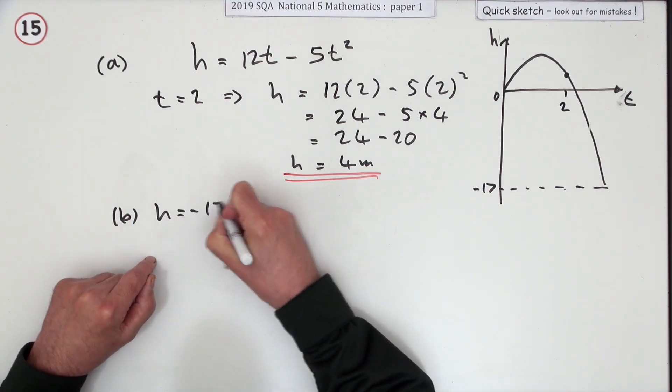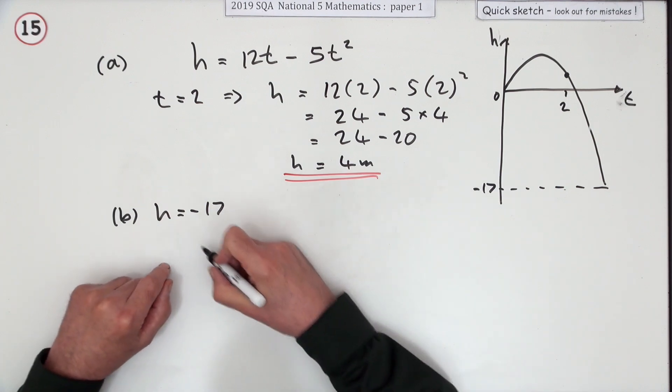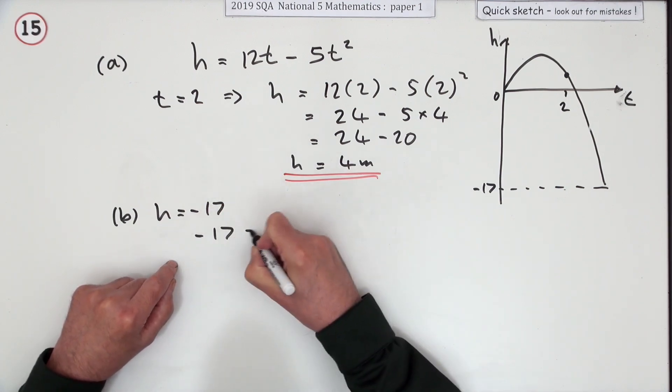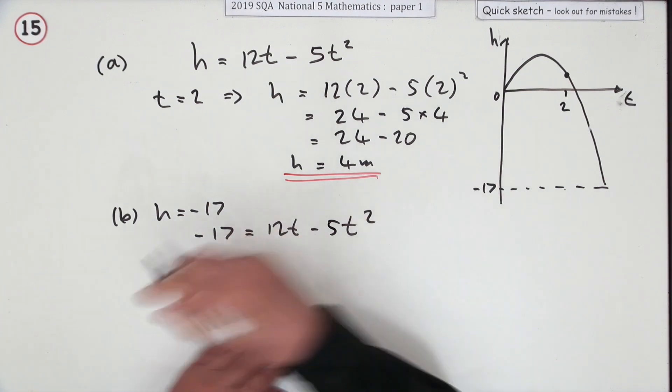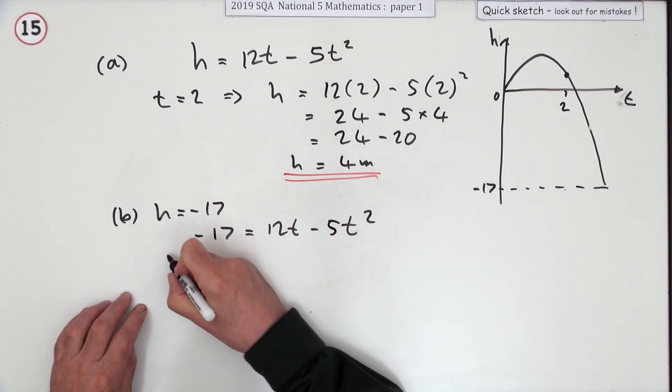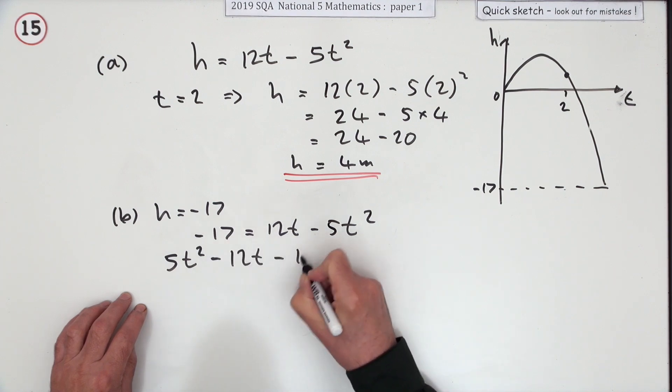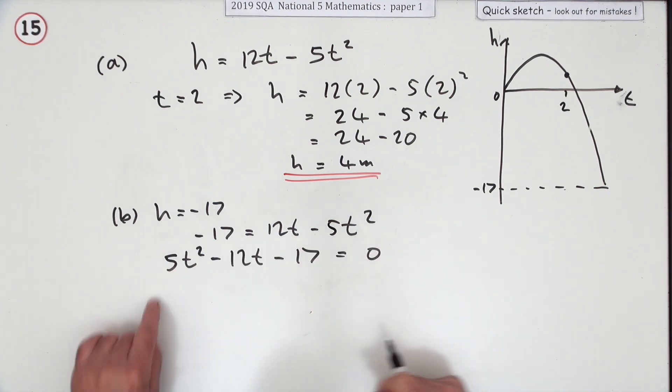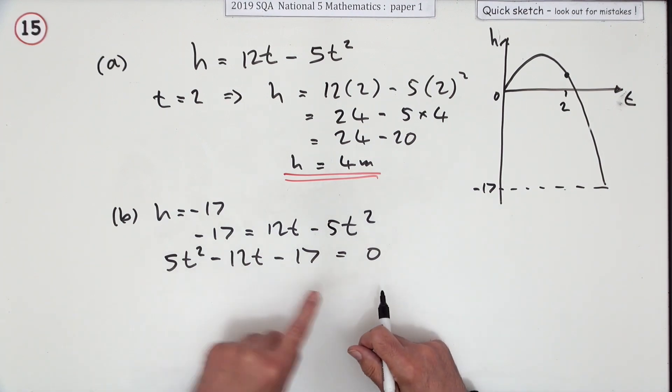But anyway, the first thing you do is when does the height get to negative 17, no matter how that's interpreted. So I've got to solve this: negative 17 is 12t minus 5t squared. It's a quadratic, bring it all over to one side: 5t squared minus 12t minus 17 is zero. So there's that quadratic to be factorized. You probably know that as a trinomial simply because it's a quadratic with three parts in it.